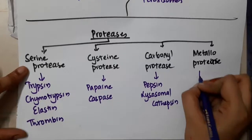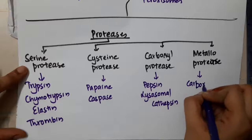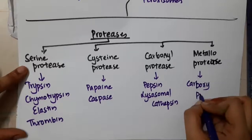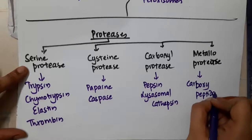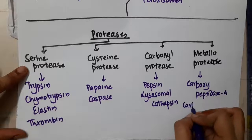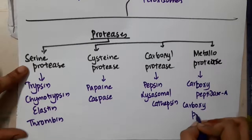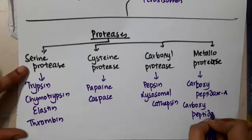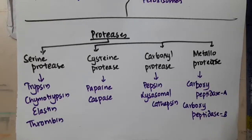Metalloproteinase includes carboxypeptidase A and carboxypeptidase B. These are important points about the classification of proteases.